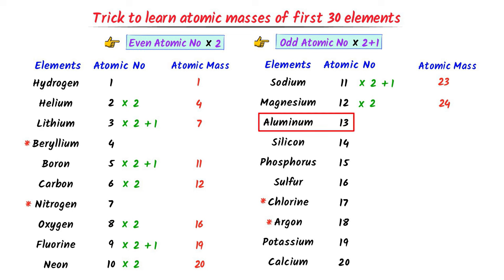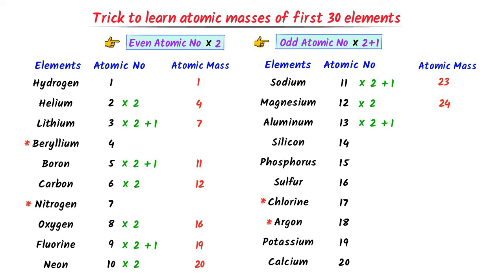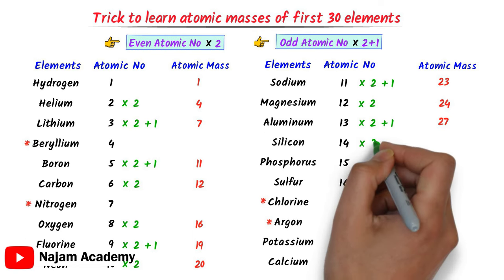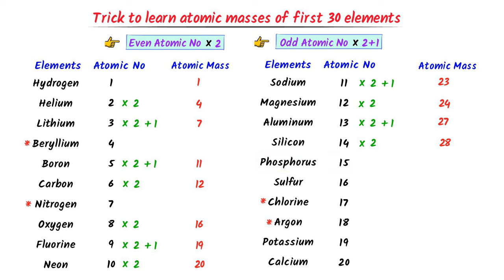The atomic number of aluminium is 13. I write 13 × 2 + 1. I get 27. The atomic number of silicon is 14. I write 14 × 2. I get 28. The atomic number of phosphorus is 15. I write 15 × 2 + 1. I get 31.